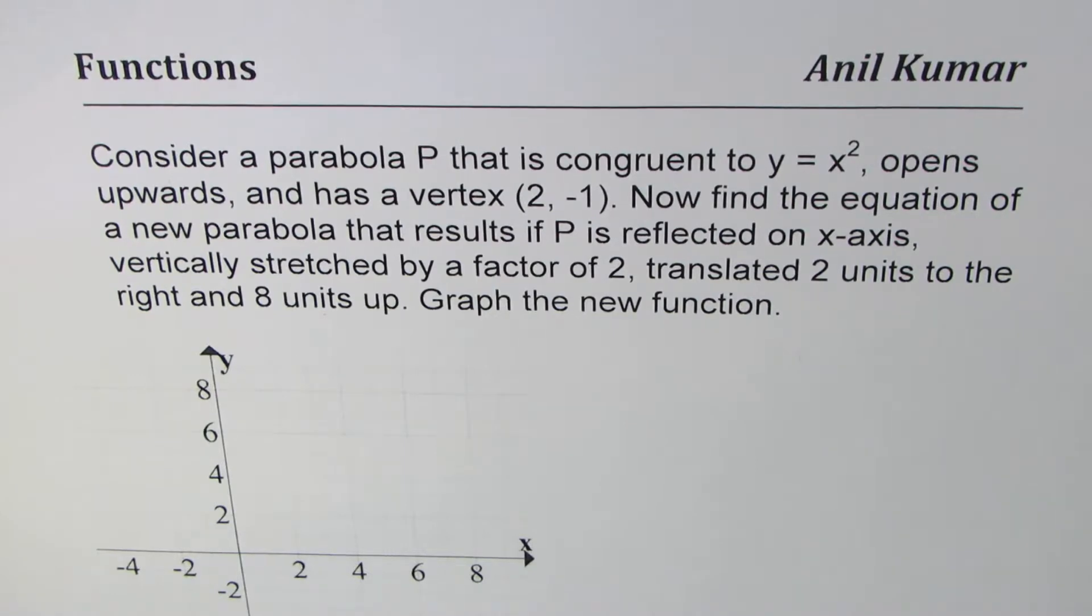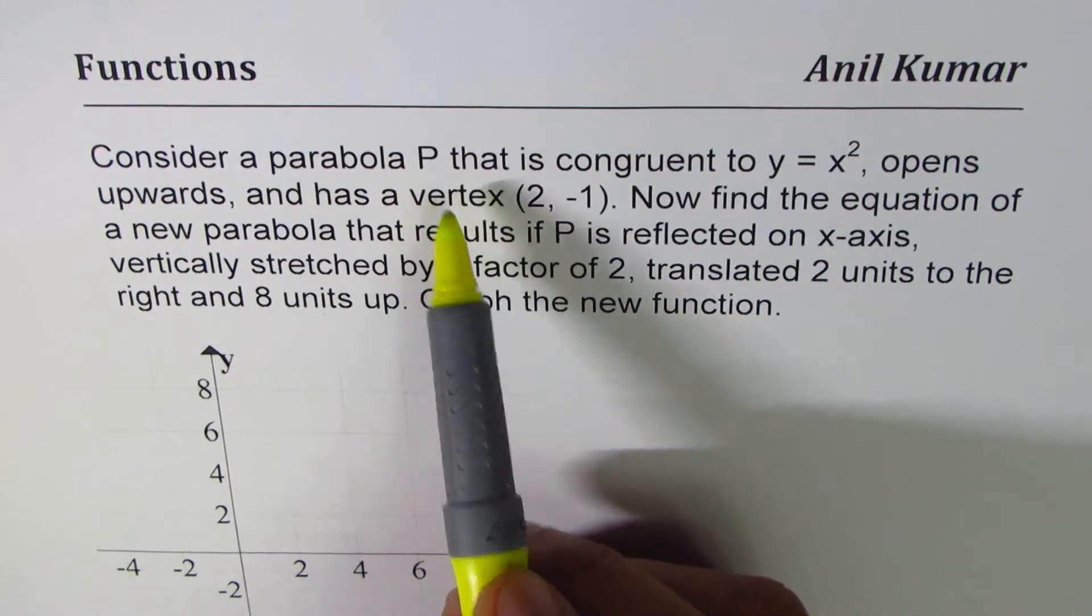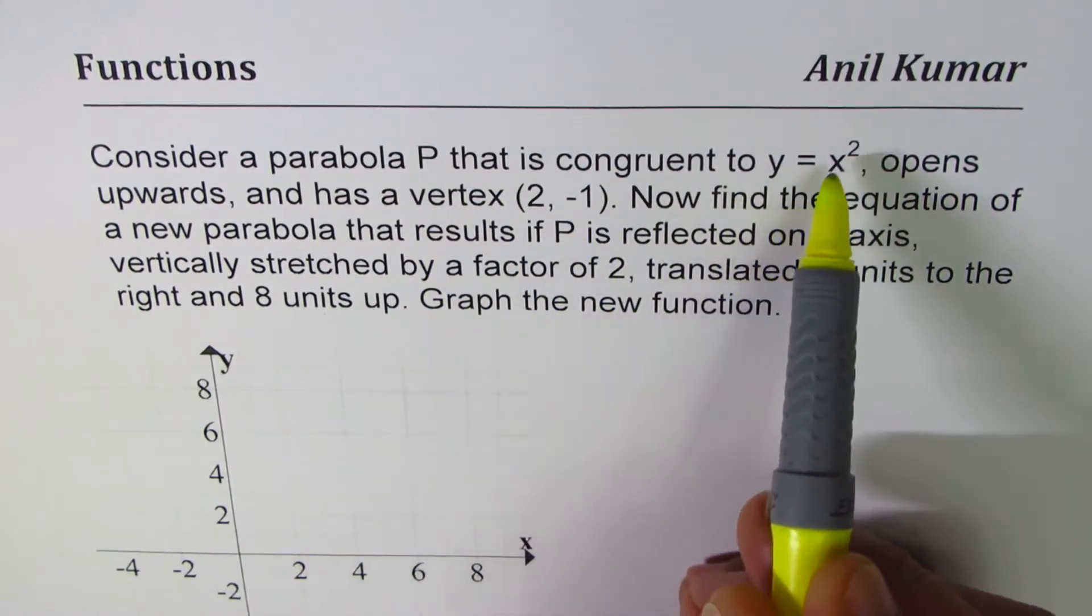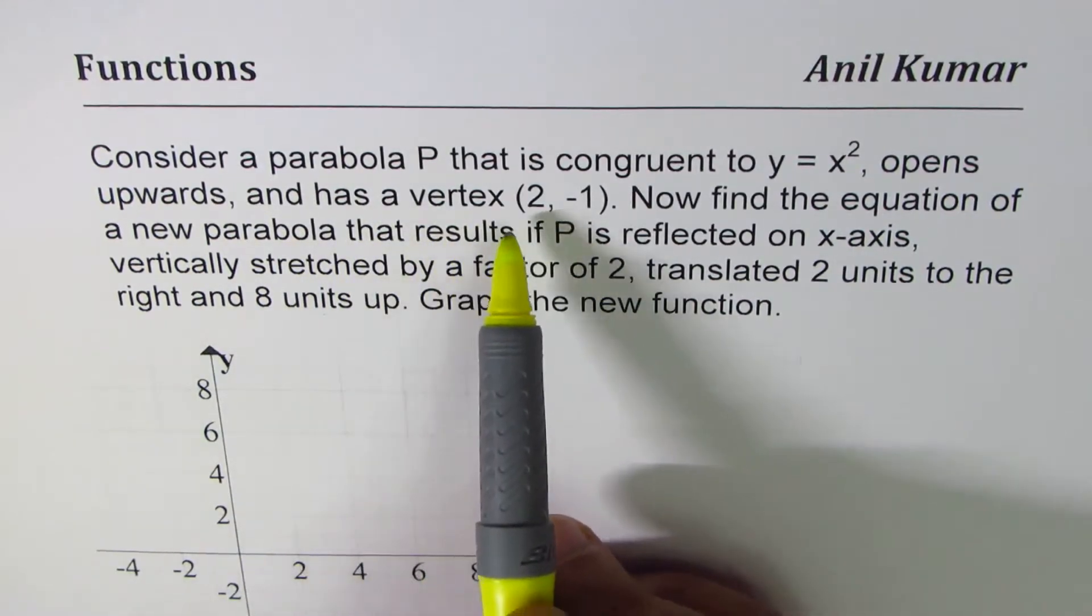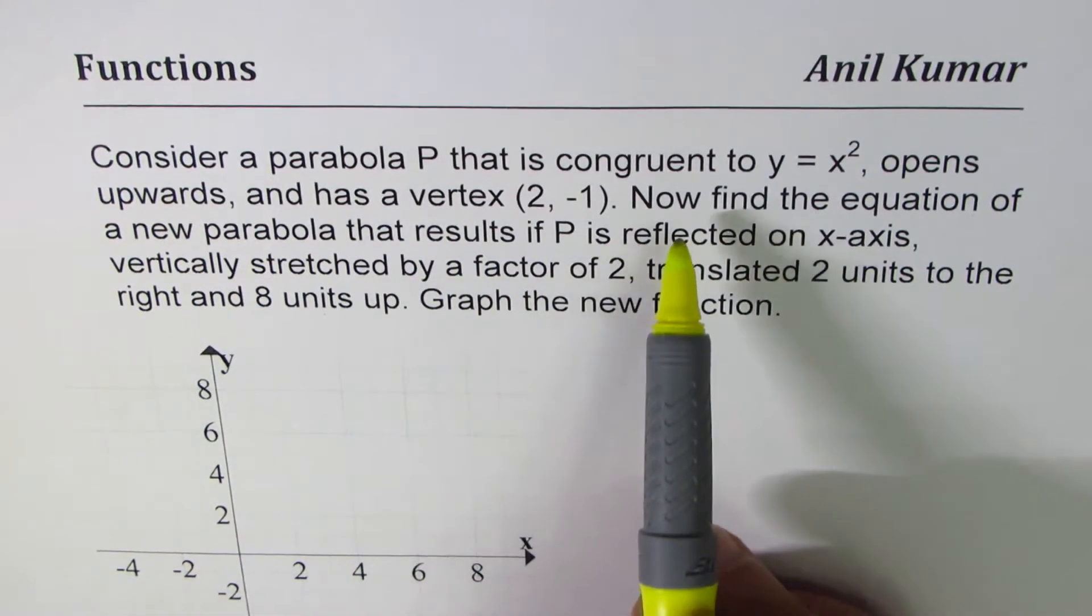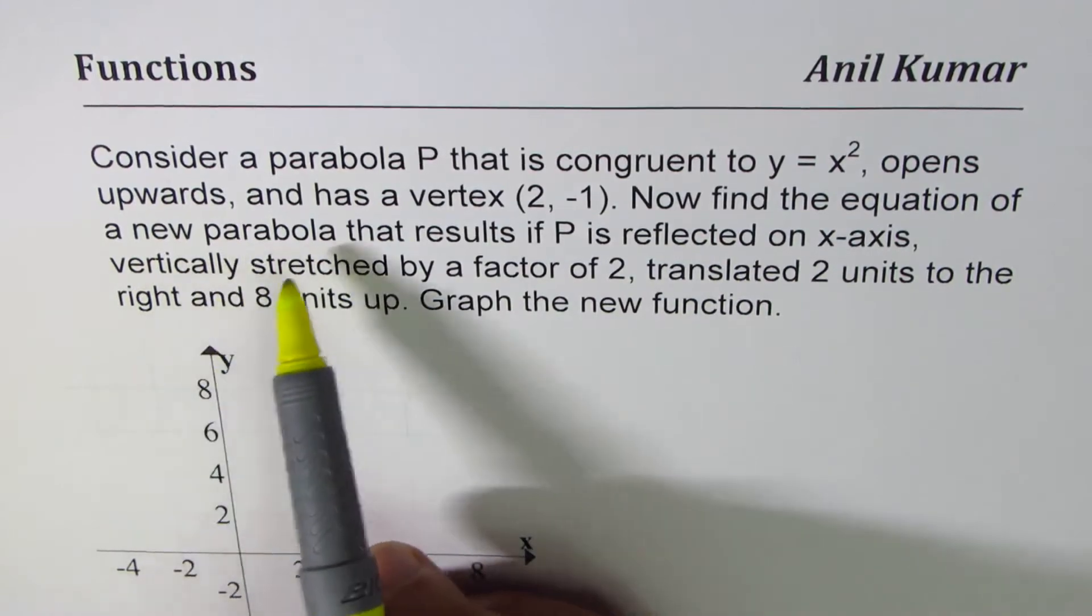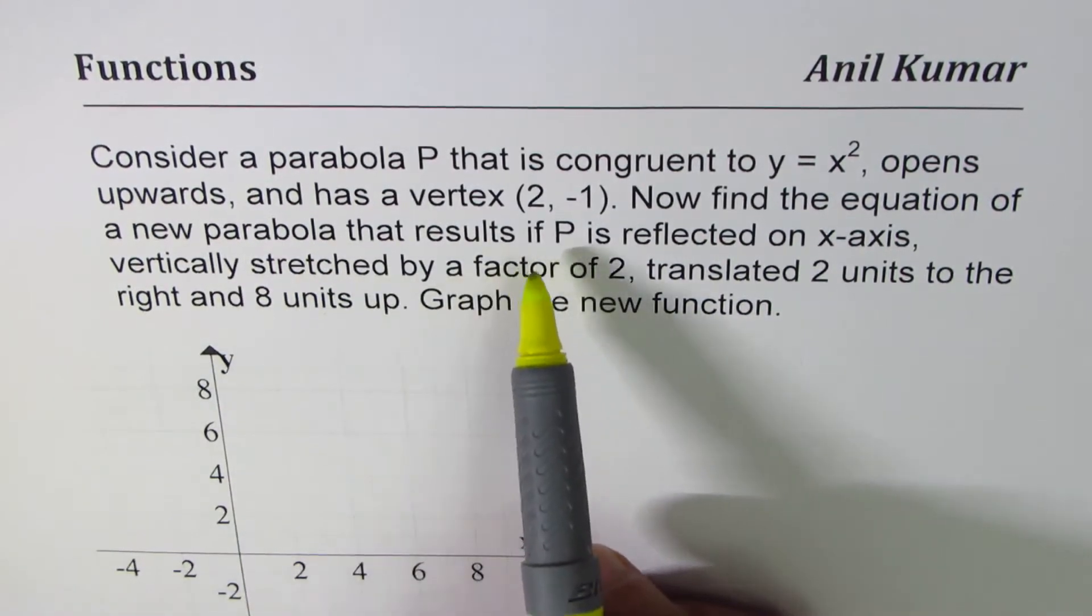The question here is: consider a parabola P that is congruent to y = x², opens upwards, and has a vertex (2, -1). Now find the equation of a new parabola that results if P is reflected on x-axis,